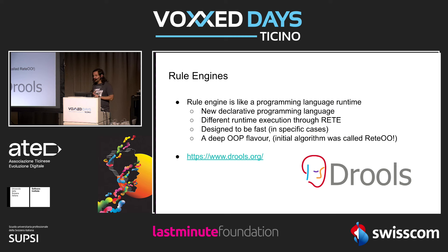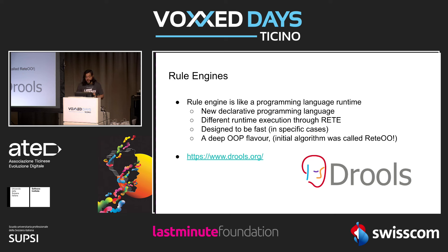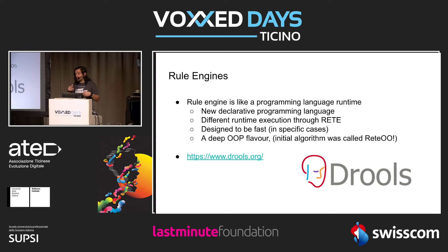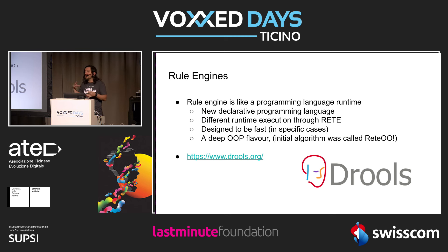Our journey starts with rule engines. Not many of you know what a rule engine is — that's okay. Think of a rule engine as a new style of programming: declarative instead of procedural. It uses an internal data structure called RETE, designed to be fast, extremely fast. It's a system where everyone can define their own rules, modify them frequently, and the execution should be fast.